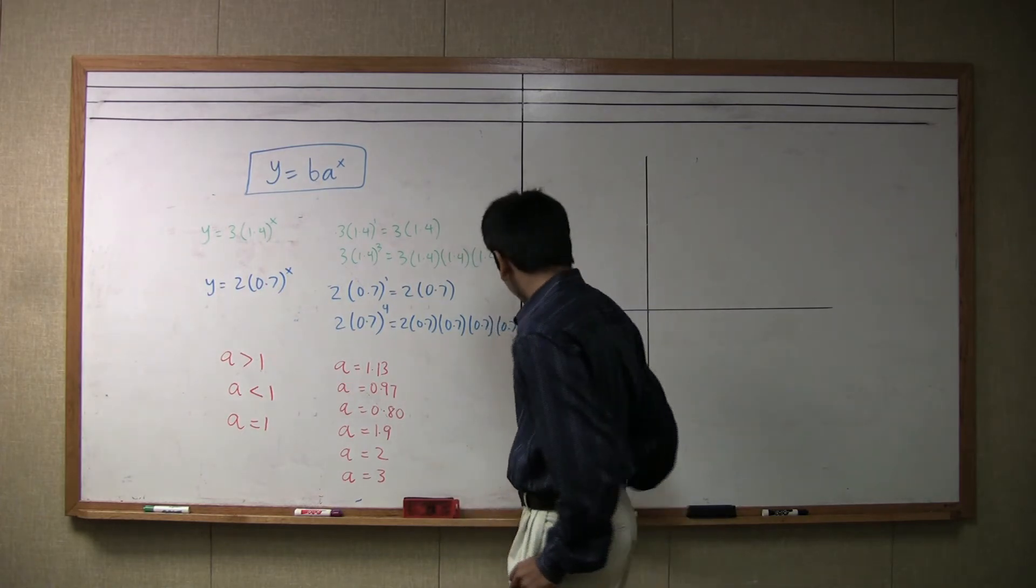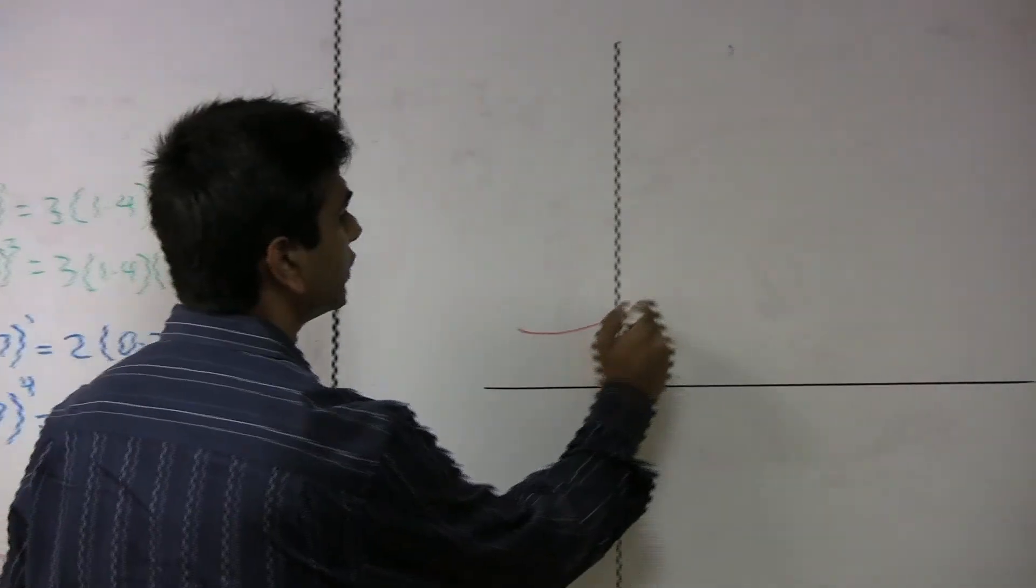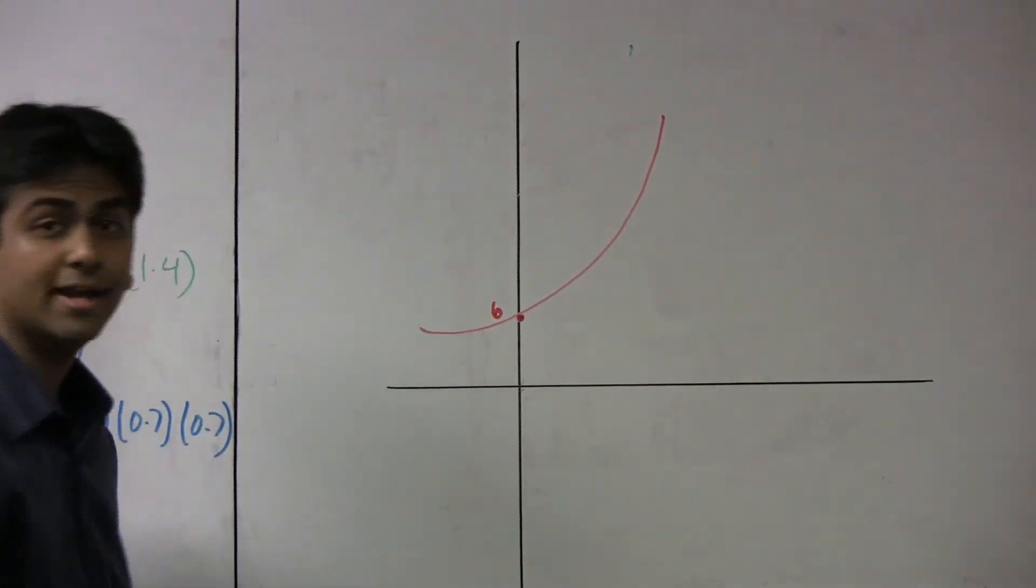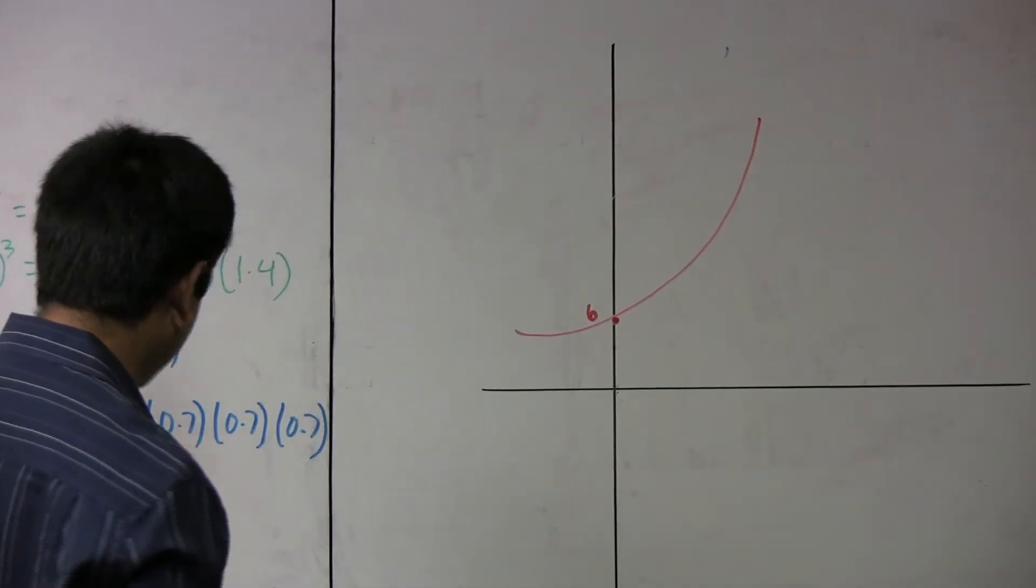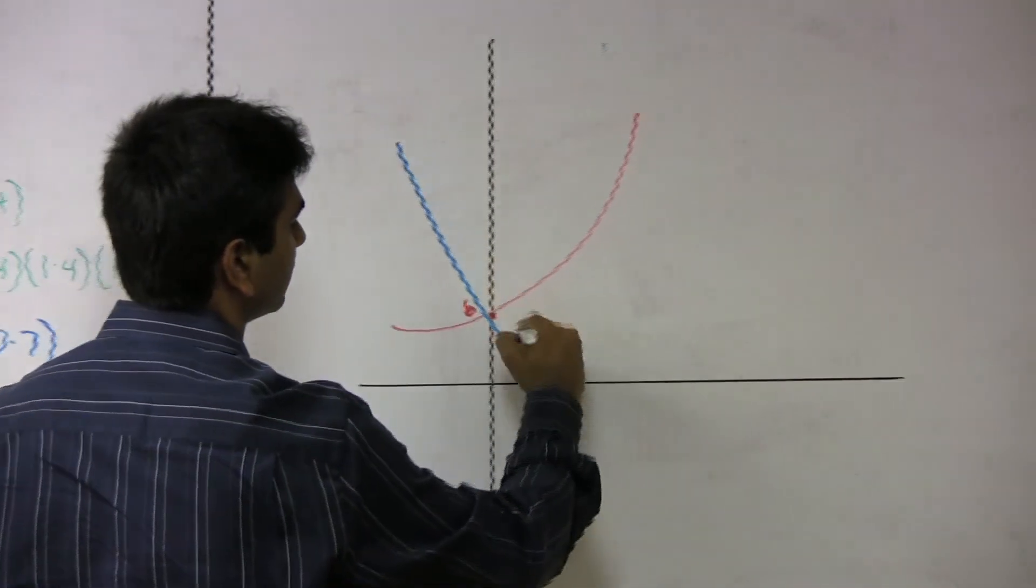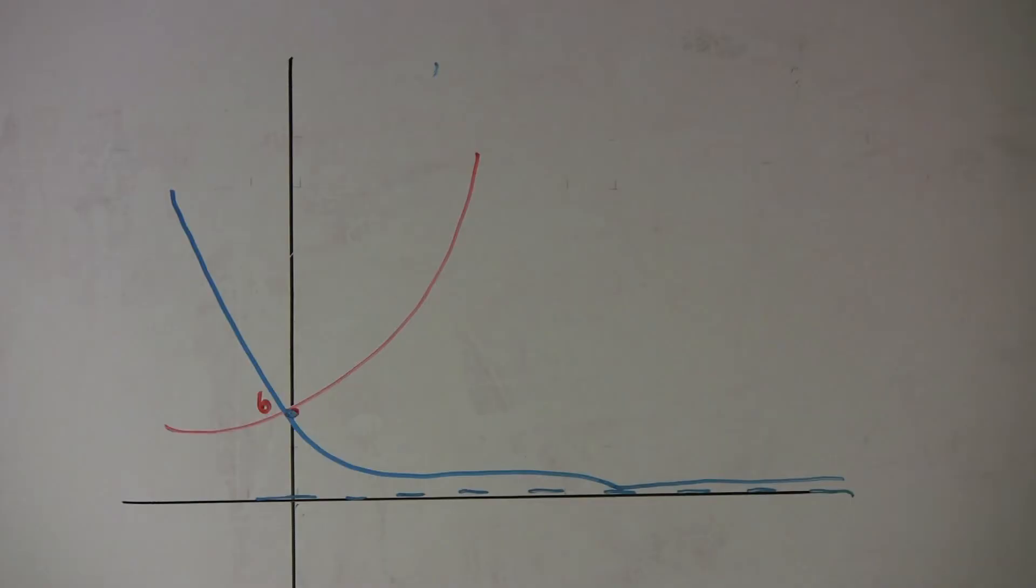So in general, the graphs will look a little something like this. If it's exponential growth, it will look like this, where this is b, the initial value, the value of y when x is 0. And if it's an exponential decay function, it will look something like this, where if this is the same value of b, it will go closer towards 0, but it will never actually reach 0.